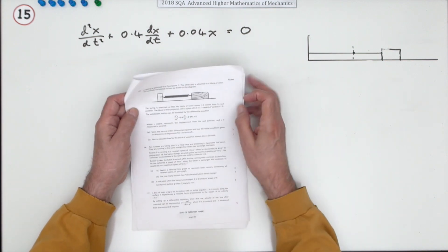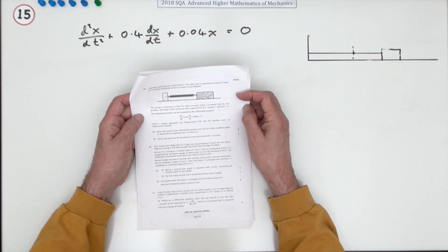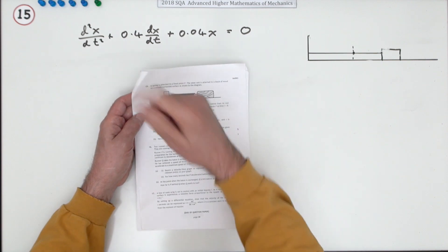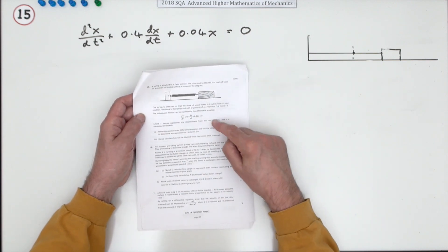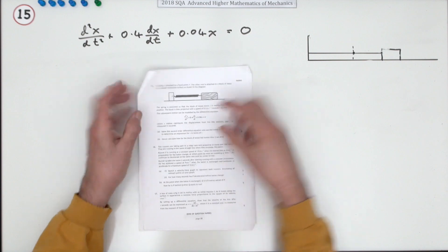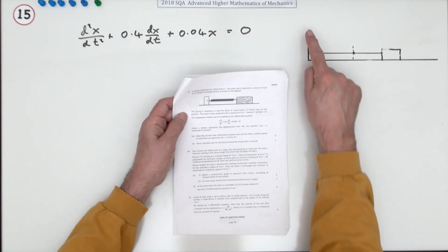Number 15 then, from the 2018 SQA Advanced Higher Mathematics of Mechanics, a six mark question, only one for the last part though. What's it look like? You've got a spring again, so a spring is attached to a fixed point here.